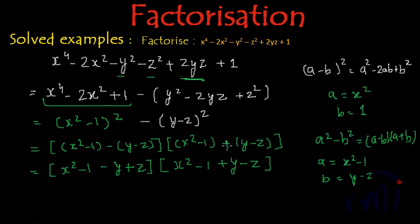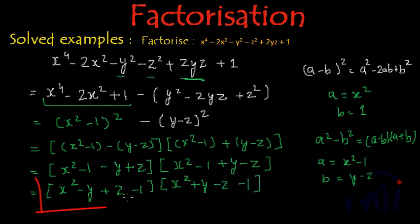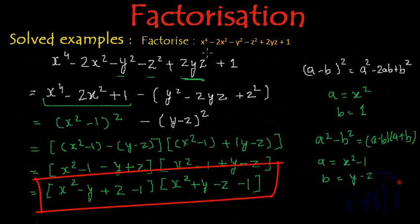Now let's open all the brackets. The second bracket has a plus sign in front, so signs inside will not change: x squared plus y minus z minus 1. The first bracket has a minus sign, so all signs inside get changed: x squared minus y plus z minus 1. Written in order, the two factors are x squared minus y plus z minus 1, and x squared plus y minus z minus 1.